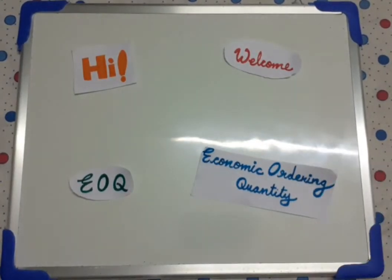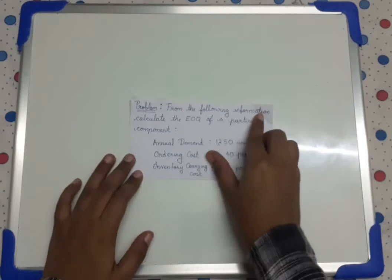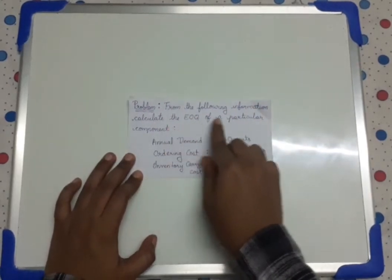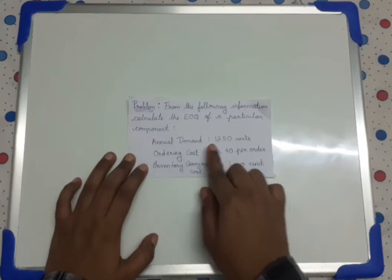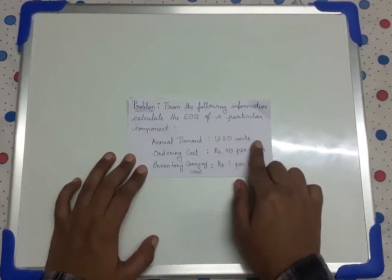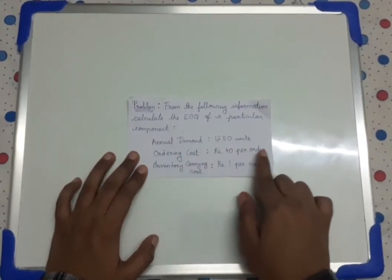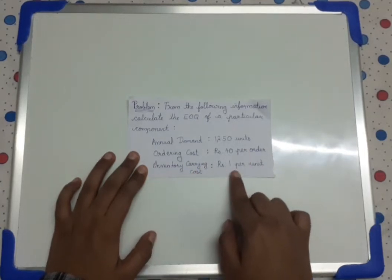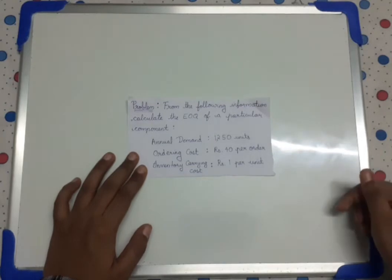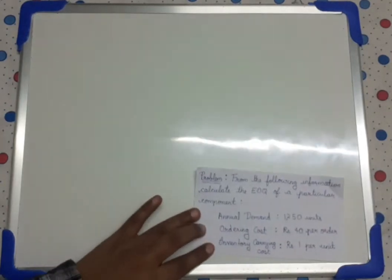Now let us look at the problem. The first problem is: from the following information, calculate the EOQ of a particular component. Annual demand is equal to 1250 units, ordering cost is equal to rupees 40 per order, and inventory carrying cost is rupees 1 per unit. The question is also given in the description. So now let's solve this problem.